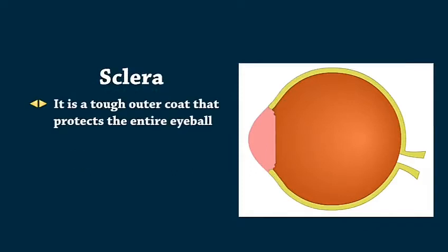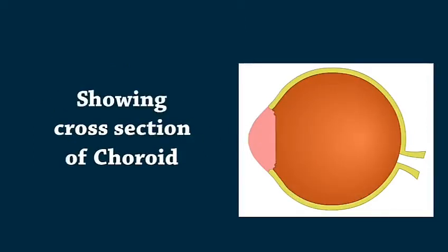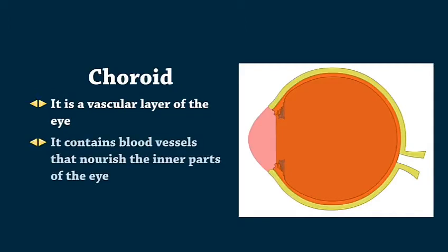Sclera is a tough outer coat that protects the entire eyeball. Choroid is a vascular layer of the eye. It contains blood vessels that nourish the inner parts of the eye.